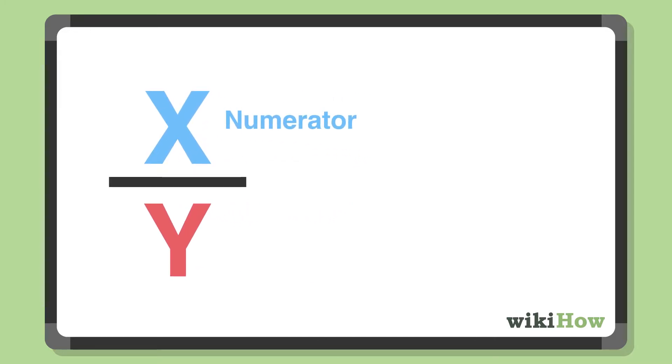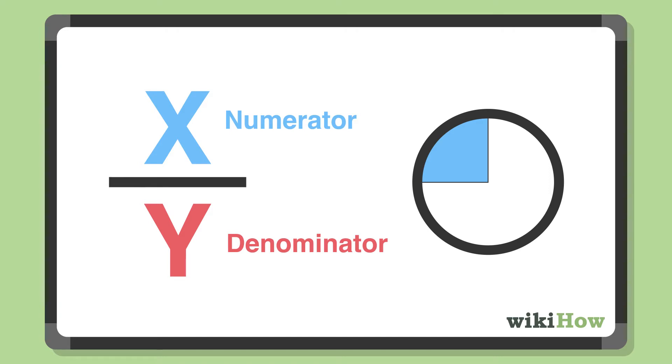The numerator is the number on top, which tells you how many parts of a whole the fraction represents. The denominator, which is on the bottom, represents the total number of possible parts making up the whole.